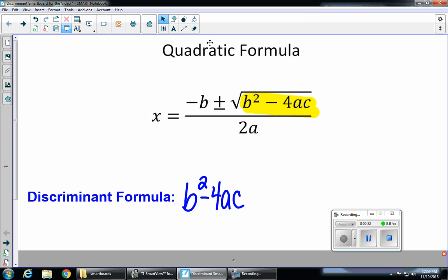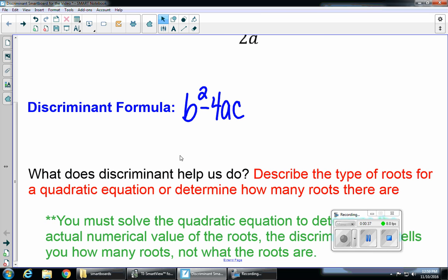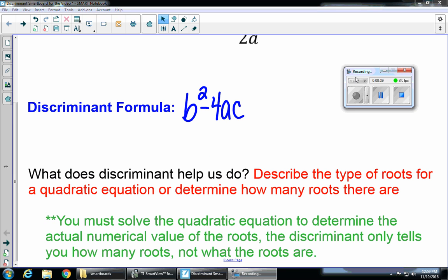So what is it that our discriminant does? What do we use it for? Our discriminant is used to describe the type of roots for a quadratic equation or to determine how many roots there are.